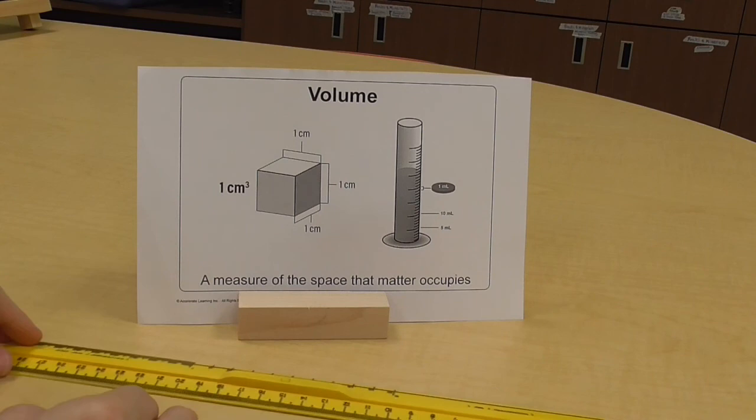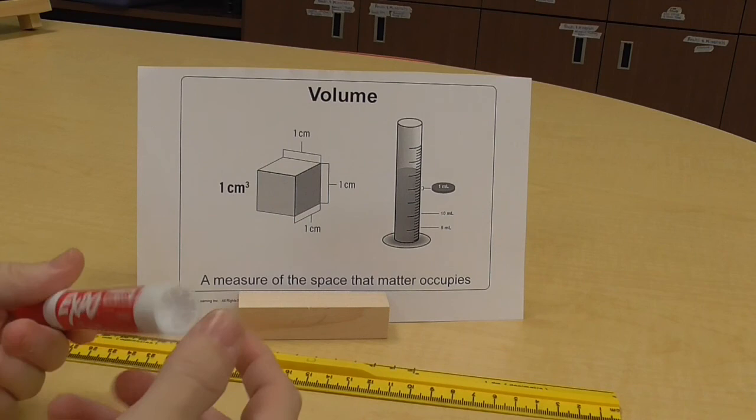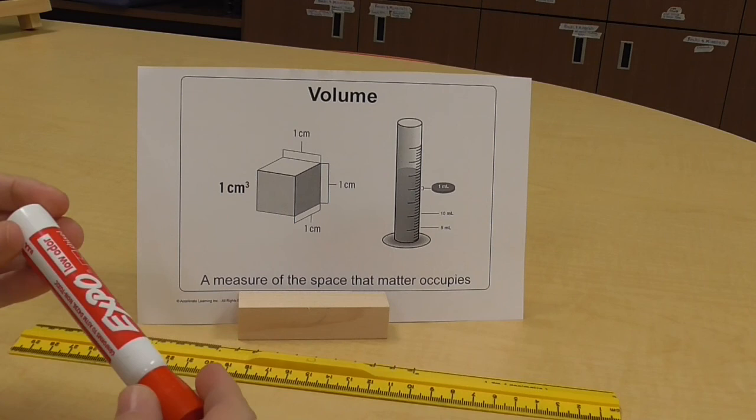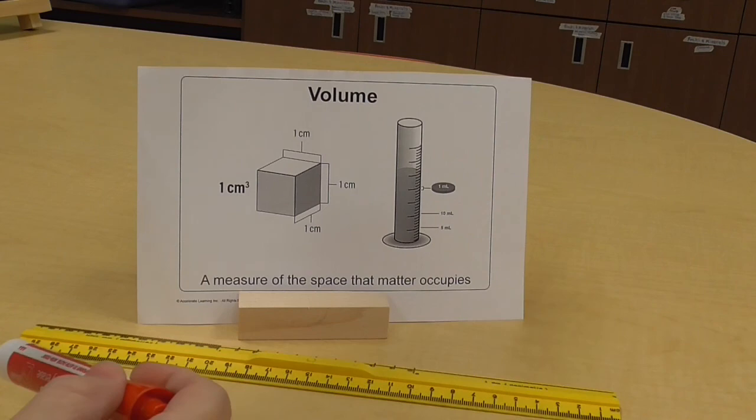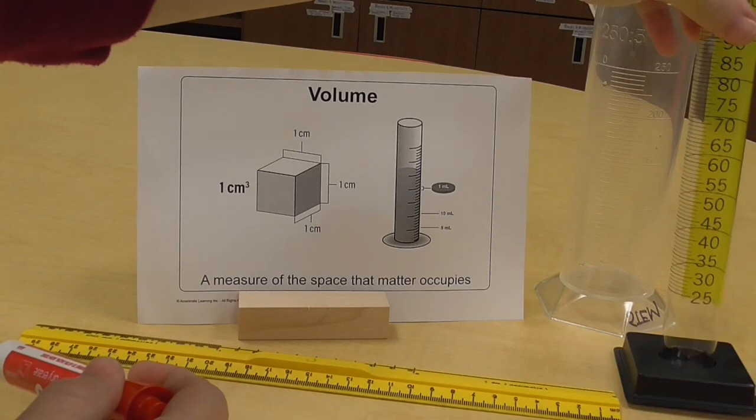Now, what if an object is kind of irregular shaped? Let's say this marker. I can't really find the volume of this using those types of measurements. So, I would need to use a graduated cylinder, which might look something like this, or even kind of smaller, a little bit more detailed, something like this.